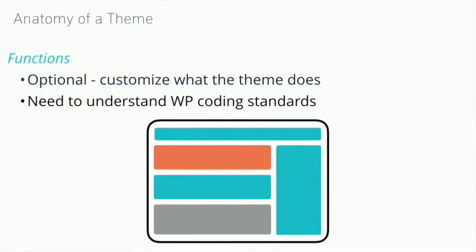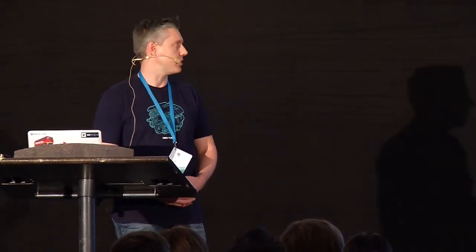There's an optional file you can use in your theme called functions.php. In your functions file, this is where you set things up to do anything that's custom based around your theme — enqueue styles, load scripts, and put any custom functions in one place. You do need a good understanding of WordPress coding standards, and it is purely in PHP.